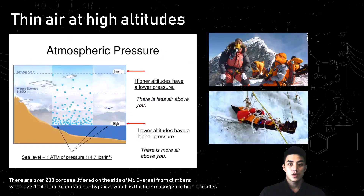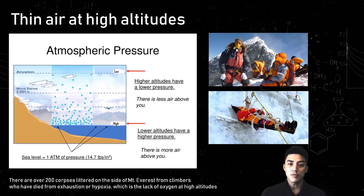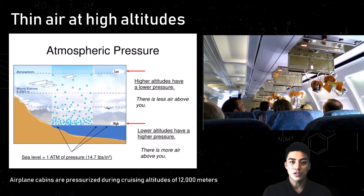The air gets thinner at high altitudes, and there are over 200 corpses littered on the side of Mount Everest from climbers who died of exhaustion or hypoxia, which is the lack of getting oxygen at high altitudes. Airplane cabins are pressurized at cruising altitudes of 12,000 meters.